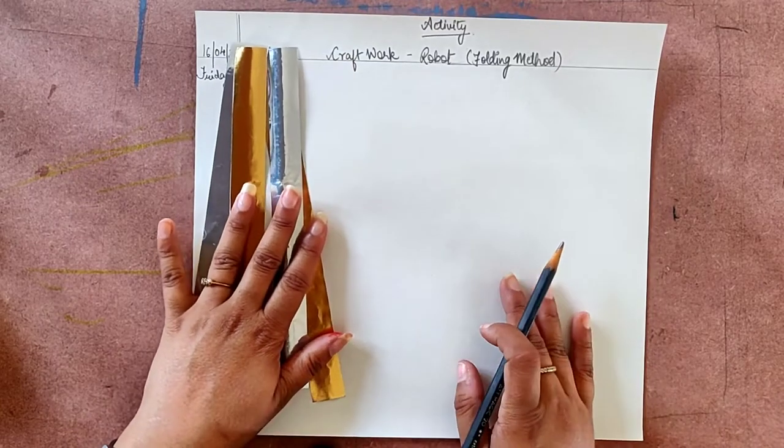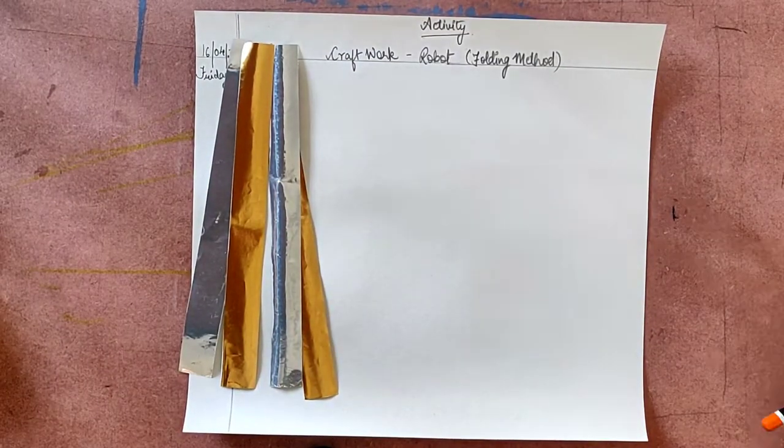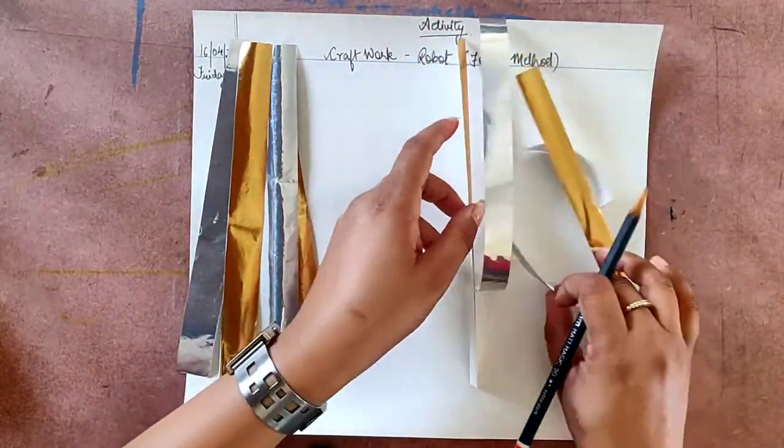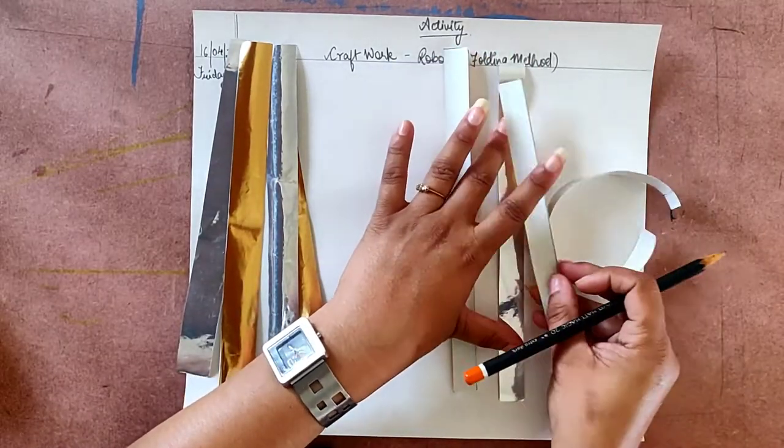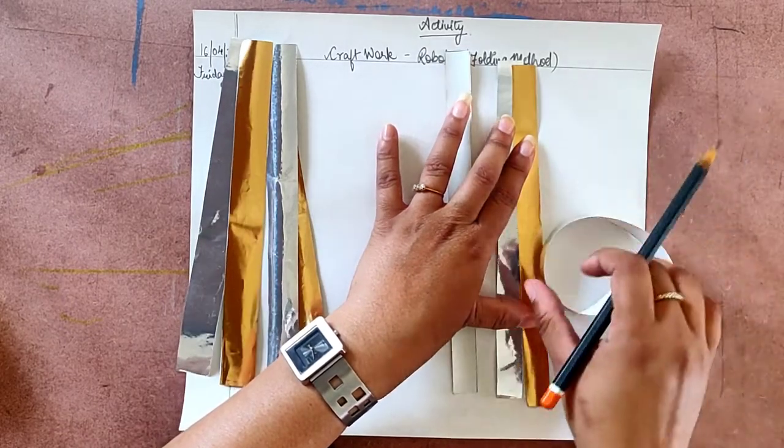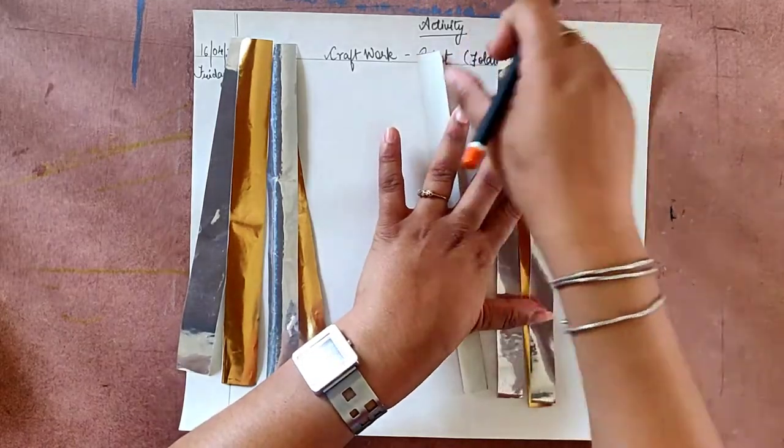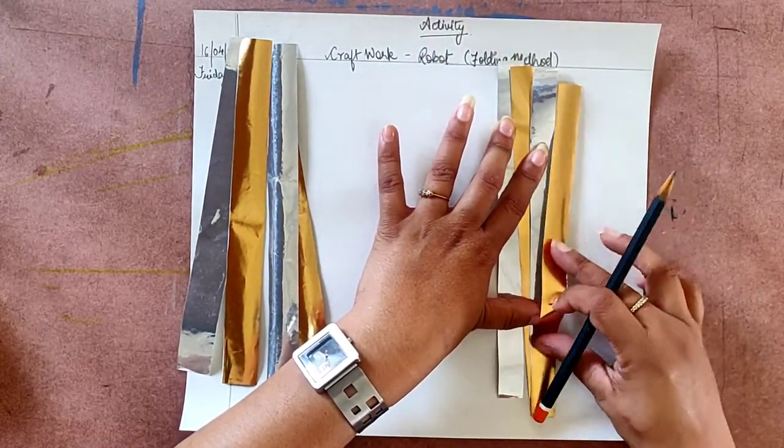From these, we are going to make legs of robots. Now, the size of these 2 sheets, the size of these 2 sheets is same. And the size of these 2 sheets is 1.5 by 20 cm. We have to work in pairs for hands and legs.